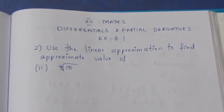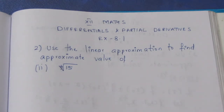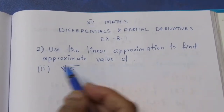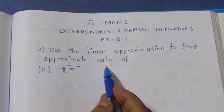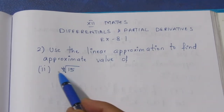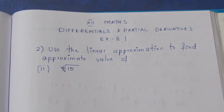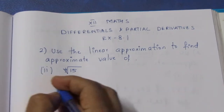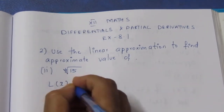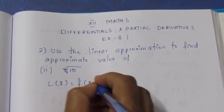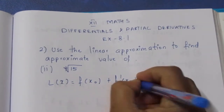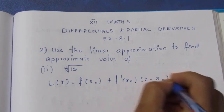Hello viewers, I am Aitli. This is a 12th standard differential and partial derivatives exercise 8.1, second sum. The question asks us to use the linear approximation to find the approximate value of the 4th root of 15. The linear approximation formula is: f(x0) plus f'(x0) into (x minus x0).